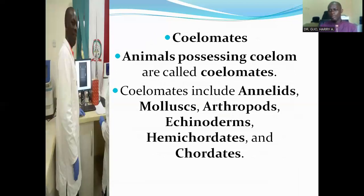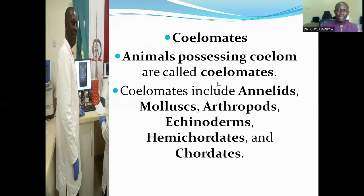Animals possessing a true coelom are called coelomates. Those organisms that possess the true body cavity include annelids, molluscs, arthropods, echinoderms, hemichordates, and chordates — all members in the phylum Annelida, phylum Mollusca, phylum Arthropoda, phylum Echinodermata, phylum Hemichordata, and phylum Chordata are coelomates. They have a body cavity in which the viscera lies.